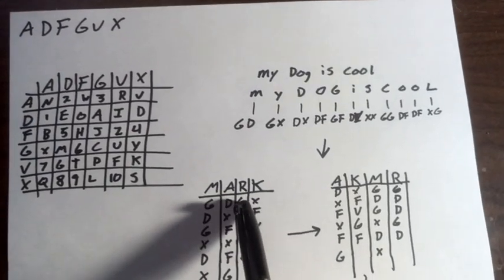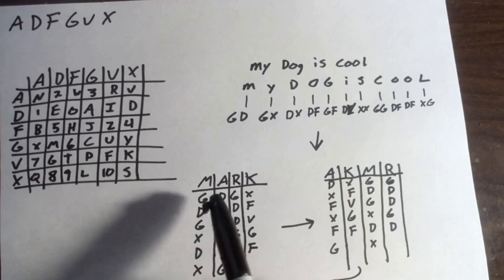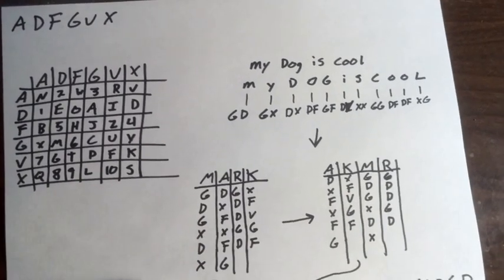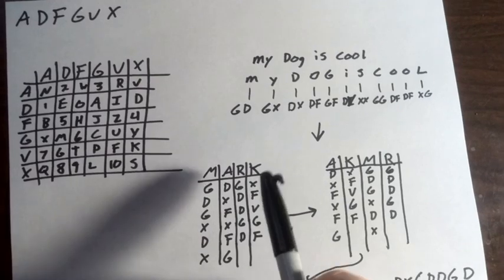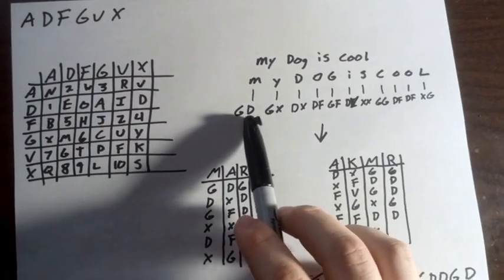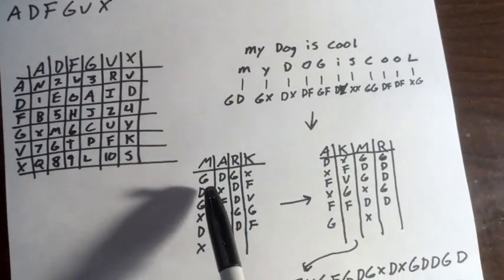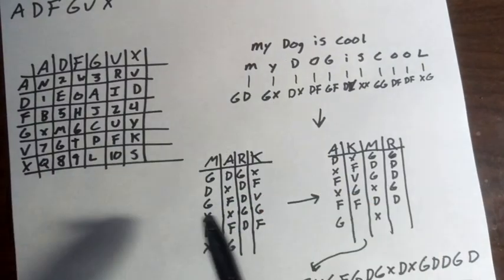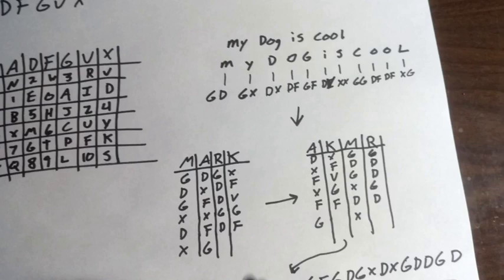This would also be shared. Here I'm using MARK, just because it was in the book that I was reading. Basically, what you do is take these coordinates and write them down in each column: GD, GX, GD, GX, and so on.